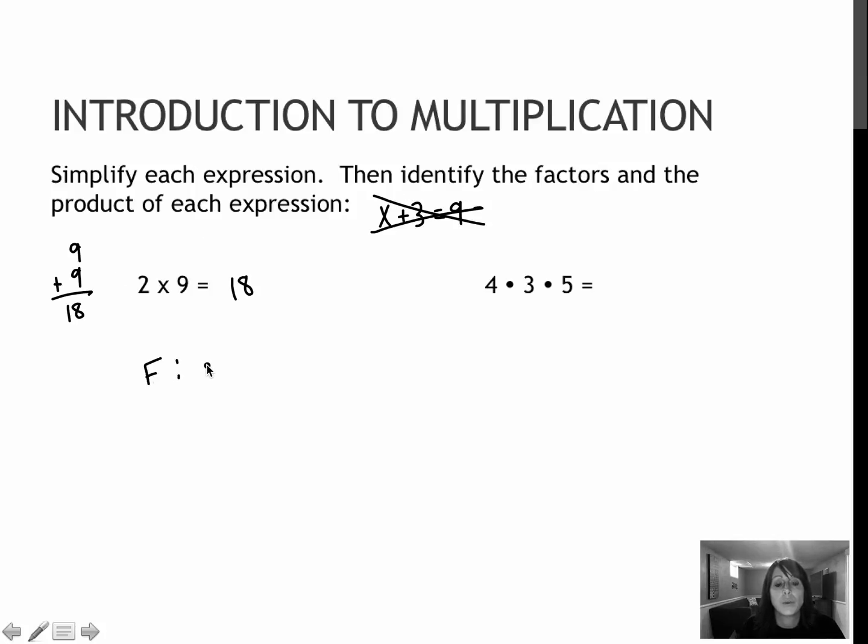So the factors are the two numbers that I multiplied, which were two and nine. Now those aren't all the factors of 18, but they didn't ask for that. They asked for the factors in this question. The product is 18, because two times nine is 18.